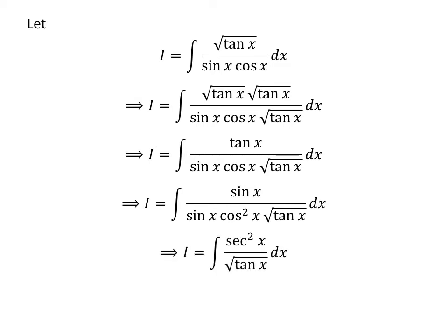Here, I have cancelled out the common factor sine of x in the numerator and the denominator, and we also know 1 upon cosine of x is secant of x. So i is equal to the integral of square of secant of x upon square root of tangent of x with respect to x.